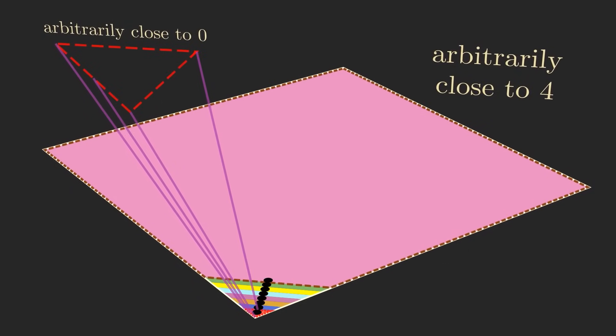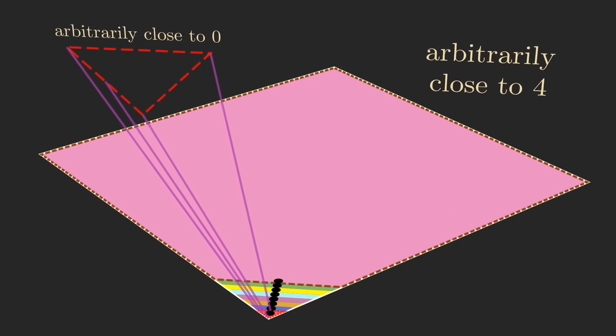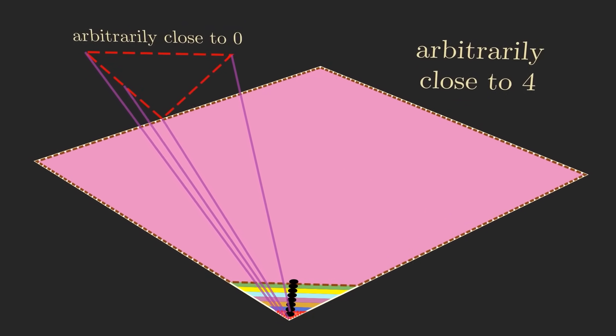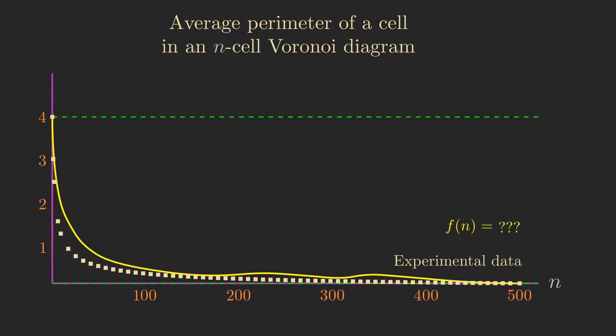which as we saw earlier is the widest range of values for a cell's perimeter. So I could draw any old downward-trending curve here that starts at 4 and approaches 0 as n gets large, and it'll be a reasonably good fit. But it seems like these two curves really do match up almost perfectly.